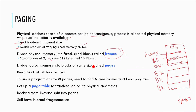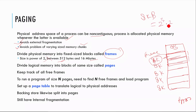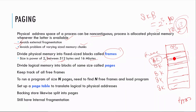The frame size is always a power of 2, and it varies between 512 bytes and 16 megabytes. For example, 8KB equals 2 to the power of 13. If we decide on 8KB, then all frames will be 8KB. If we choose 16KB, then all frames will be 16KB.